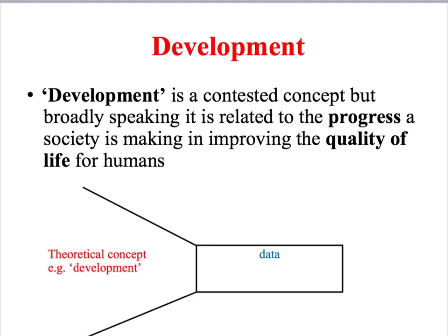When ranking countries in terms of their development, where countries end up depends on how we operationalise development — the definitions and measurements we use. A country like the USA might rank very highly using economic indicators of development to do with wealth and income, but would come near the bottom of a ranking system looking at environmental indicators of sustainable development. How we choose to operationalise development, which is always in part a value judgment, will shape the data we actually collect.